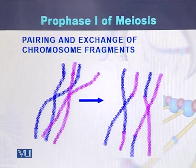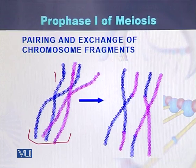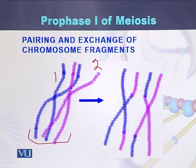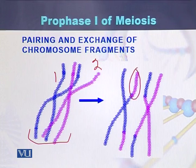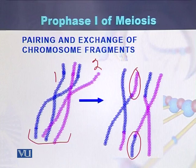Here we can see the pairing and exchange of chromosome fragments. The homologous chromosomes are shown: homolog one in blue and homolog two in pink. They come close to each other, and as a result of the crossover or chiasmata formation between the two homologous chromosomes, they exchange fragments — pink color appears here while blue appears there. This process is called the exchange of fragments, chiasmata formation, or crossing over between homologous chromosomes.